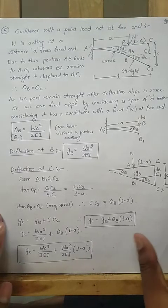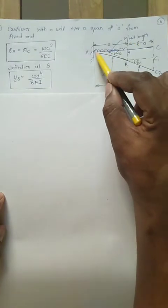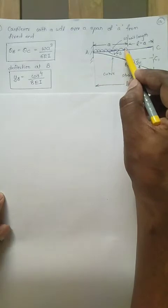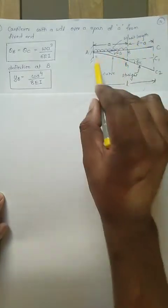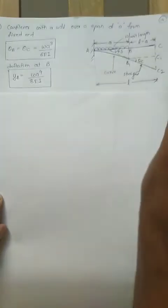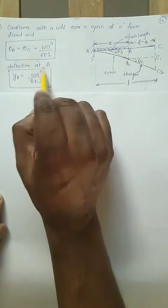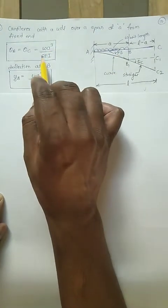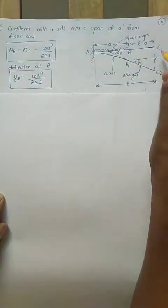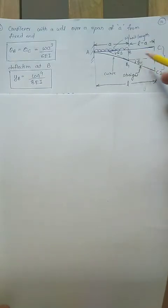The next case considers a cantilever beam with a UDL (uniformly distributed load) over a partial span from the fixed end. The UDL acts from the fixed end up to point B over distance 'a', and from B to C the beam is straight, similar to the previous case. The same diagram applies: the curved part is from A to B, and the straight part is from B to C. theta_b equals theta_c equals W·a³ / (6EI) for UDL, as previously derived. Deflection at B equals W·a⁴ / (8EI).